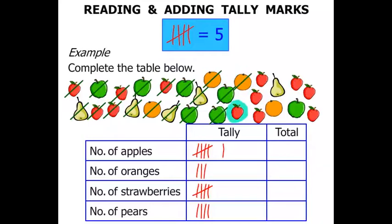There is one. There is another one. And another one. And another one. A pear. And that is our fifth pear. So the line goes across.